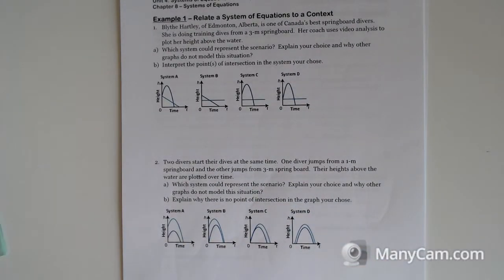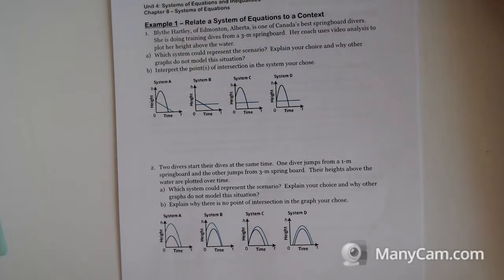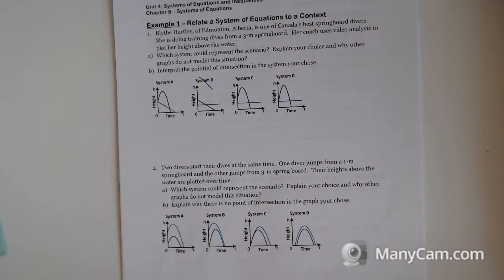Relate a system of equations to a context. Blythe Hartley of Edmonton, Alberta, is one of Canada's best springboard divers. She's doing training dives from a three-meter springboard. Her coach uses video analysis to plot her height above the water. Which of the following systems could represent this scenario? We know she's diving into the water, and she starts three meters up in the air. The solid blue lines represent her height over time. I don't think she just falls into the water.